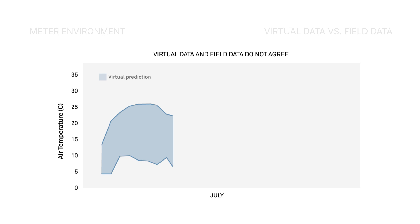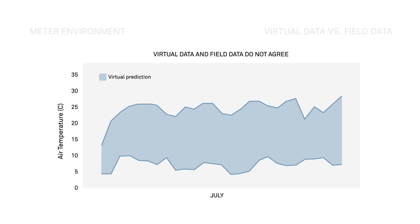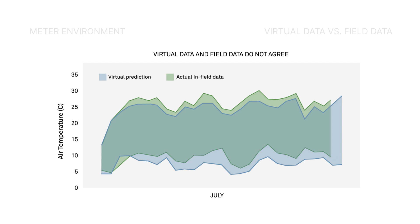Here's a virtual prediction of maximum and minimum temperatures in a field across the month of July. Let's compare these numbers to actual maximum and minimum temperatures directly measured in the same field. The actual infield data disagree with the virtual prediction.